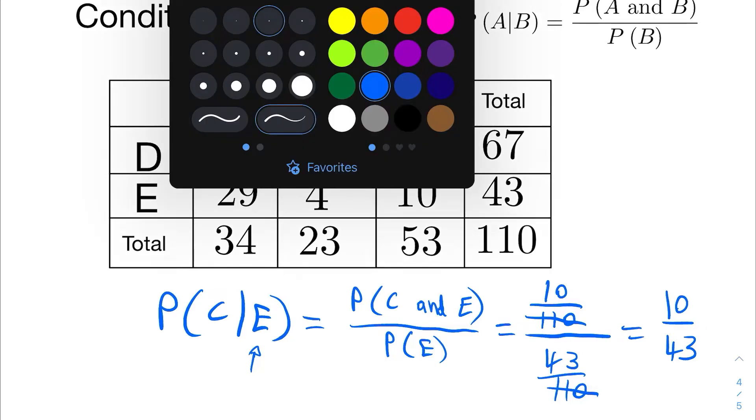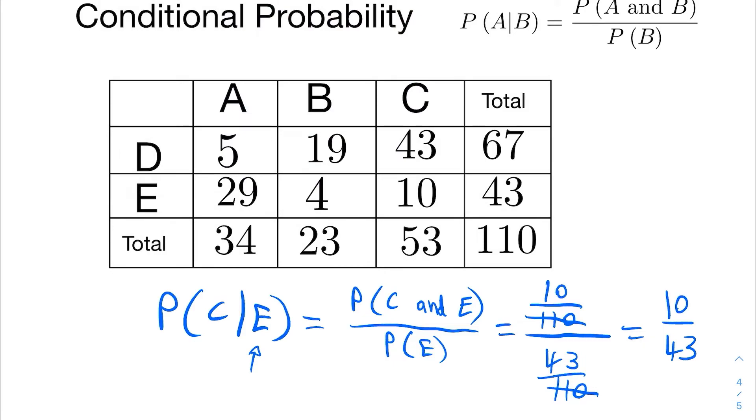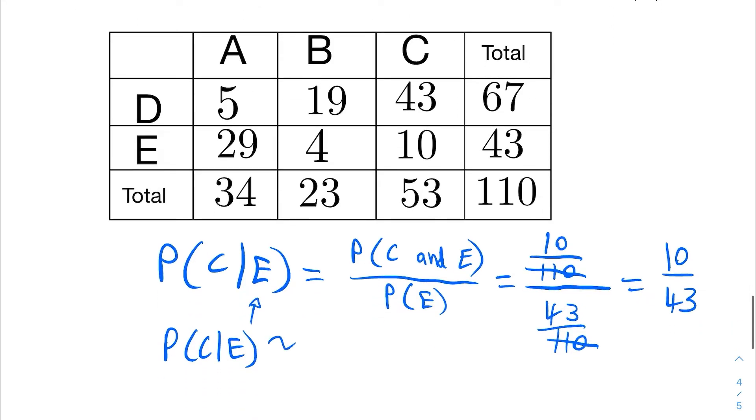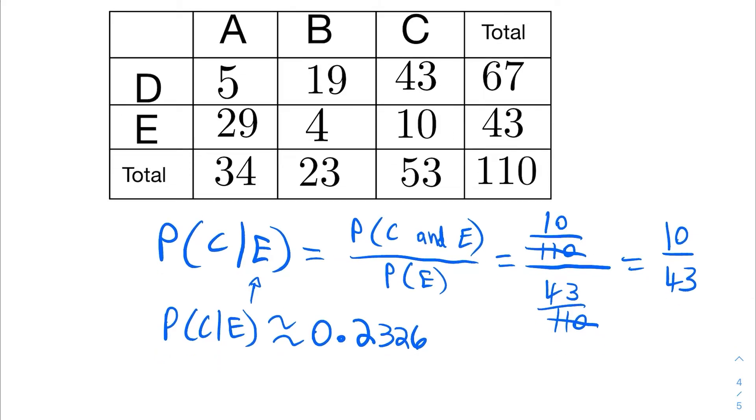Now this probability is approximately equal to 23 percent, 0.2326. So that's the probability of C given that we already know E has occurred.